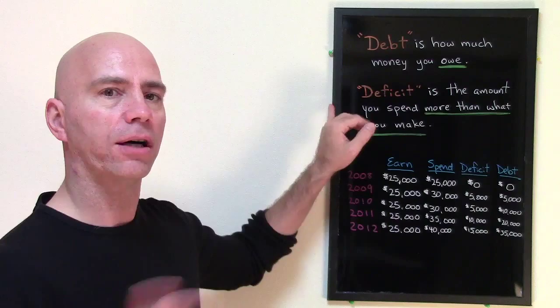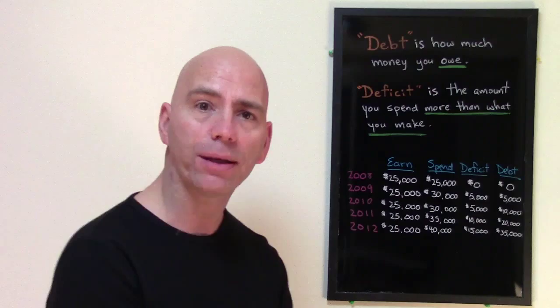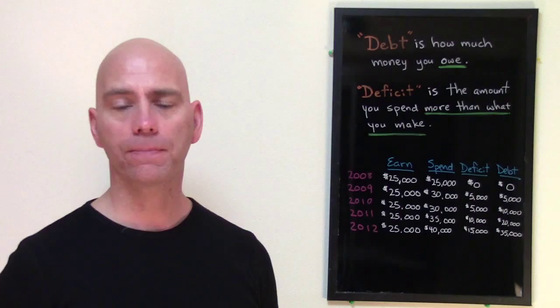The opposite, by the way, the opposite of a deficit is a surplus. So if you make $25,000 and you spend $20,000, then you don't have a deficit — you have a surplus of $5,000.